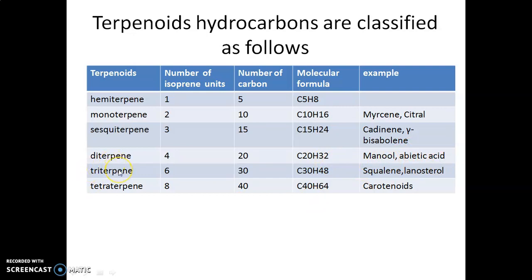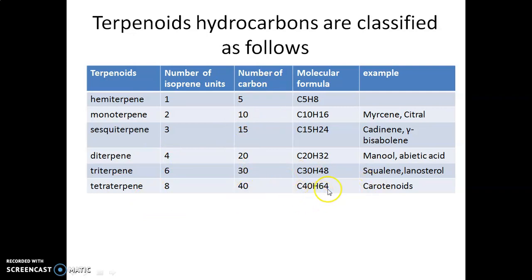Triterpenes are the terpenoids that consist of six isoprene units and the number of carbons is 30. Tetraterpenes have the molecular formula C40H64. Examples of tetraterpenes are carotenoids — alpha, beta, gamma-carotene, and lycopene.